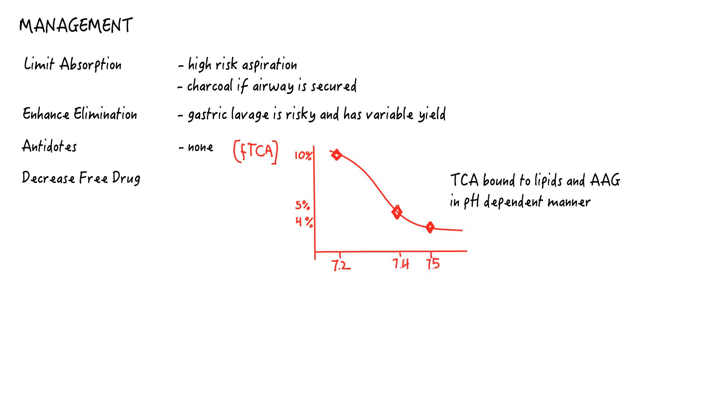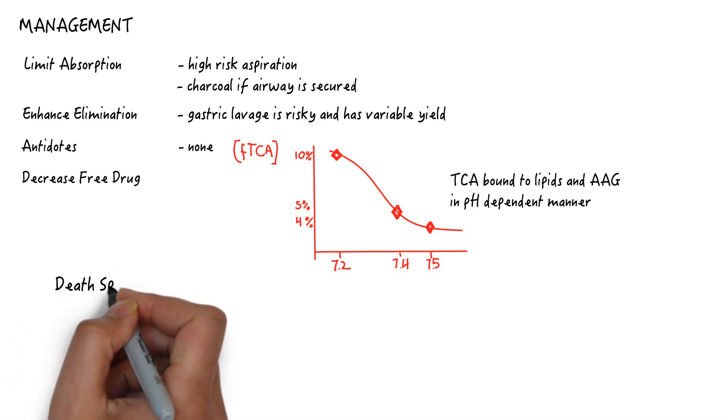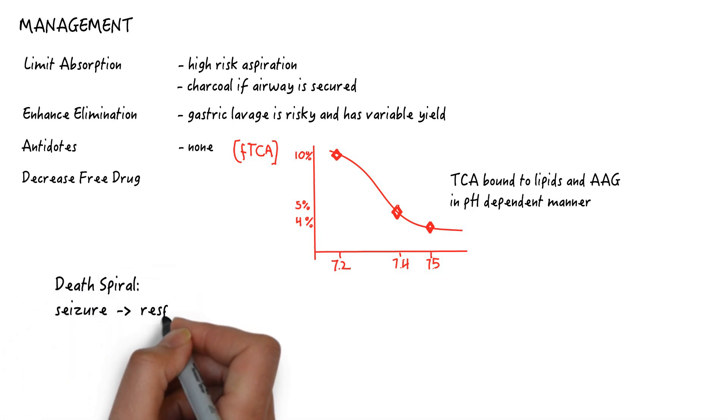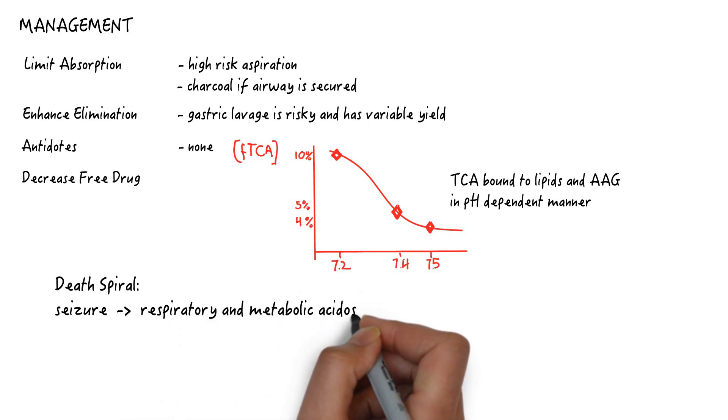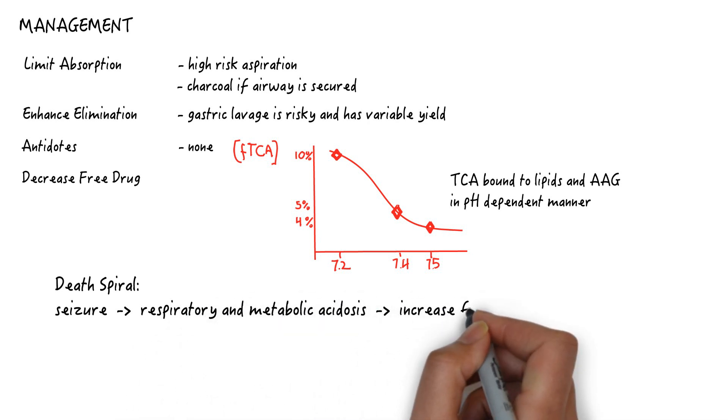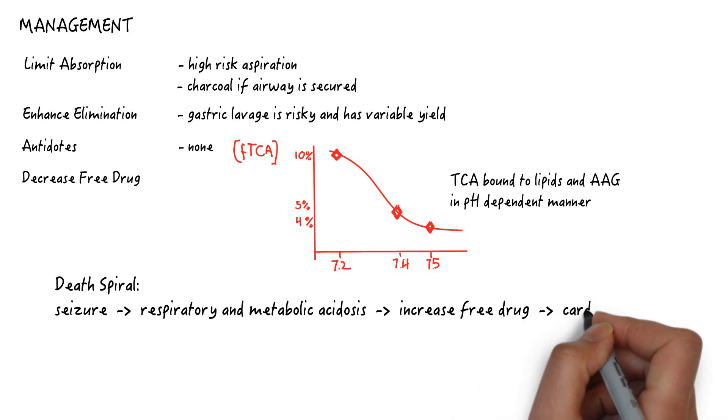This is yet another reason why TCA toxicity is so dangerous. It generates a death spiral. With somnolence, hypopnea, and seizures, there is respiratory and metabolic acidosis. This can easily more than double the amount of free drug and increase the potency of toxicity on the cardiovascular system to create wide complex tachycardia and cardiac arrest. In other words, seize and code.